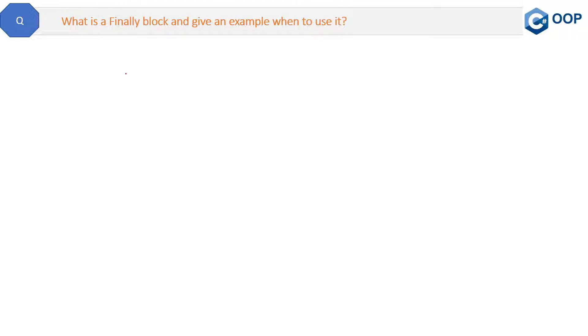So let's start with this question. This is a very simple but important question: What is a finally block and give an example when to use it? The answer is finally block will be executed irrespective of the exception, meaning whether any error or exception will occur or not, the finally block will definitely execute.